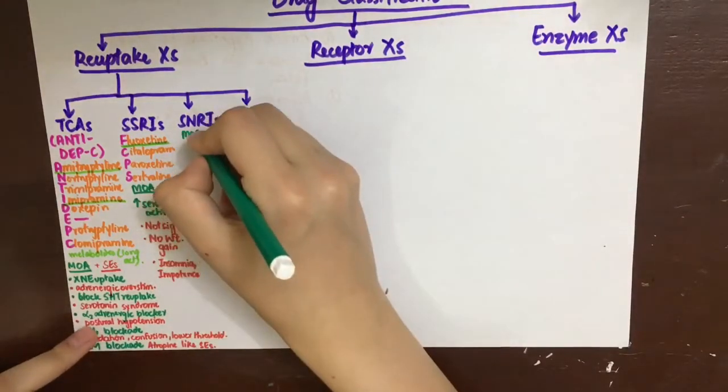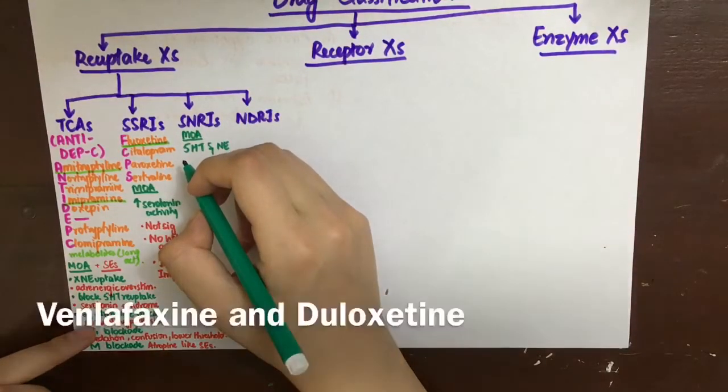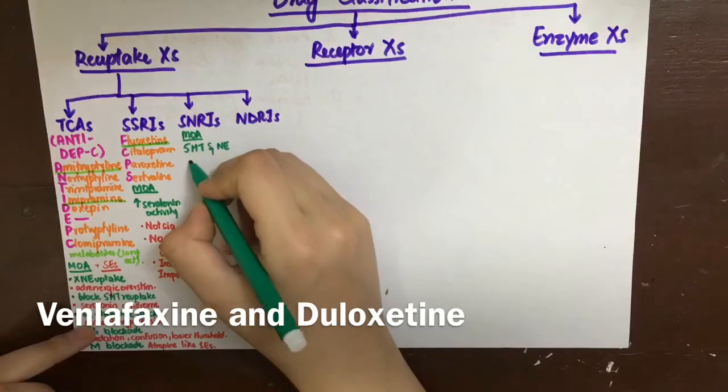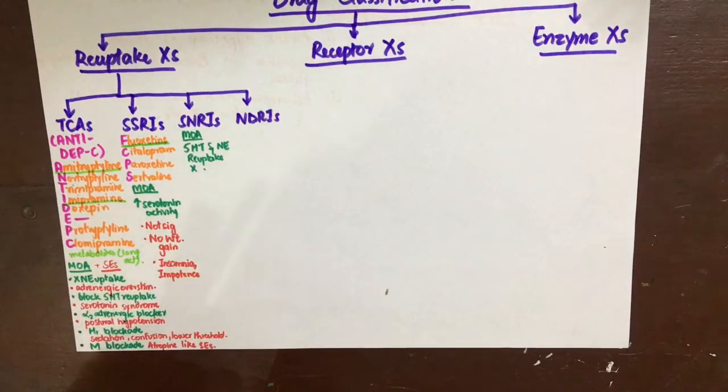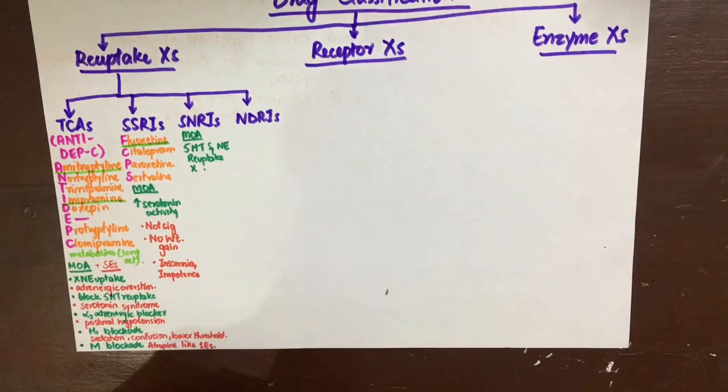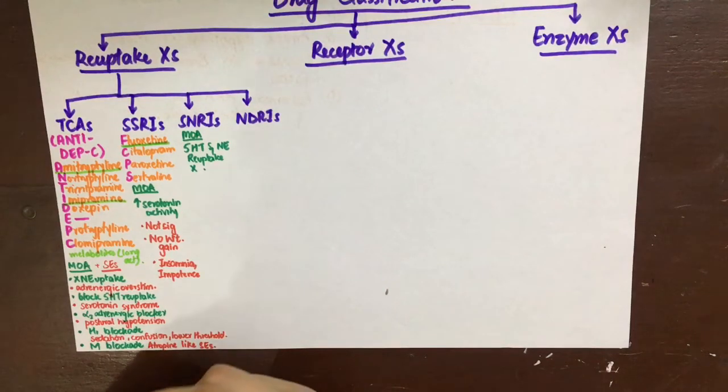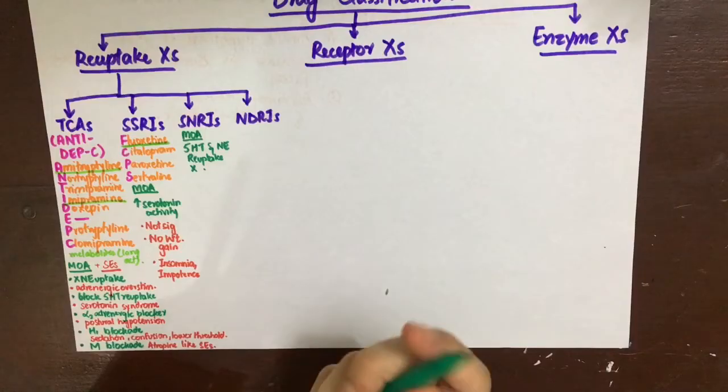Coming to the serotonin noradrenaline reuptake inhibitors, they include venlafaxine and duloxetine. The mechanism of action is clear. They will inhibit both serotonin and noradrenaline reuptake. They have no side effects like anticholinergic sedation, weight gain, etc. and they do not precipitate seizures.